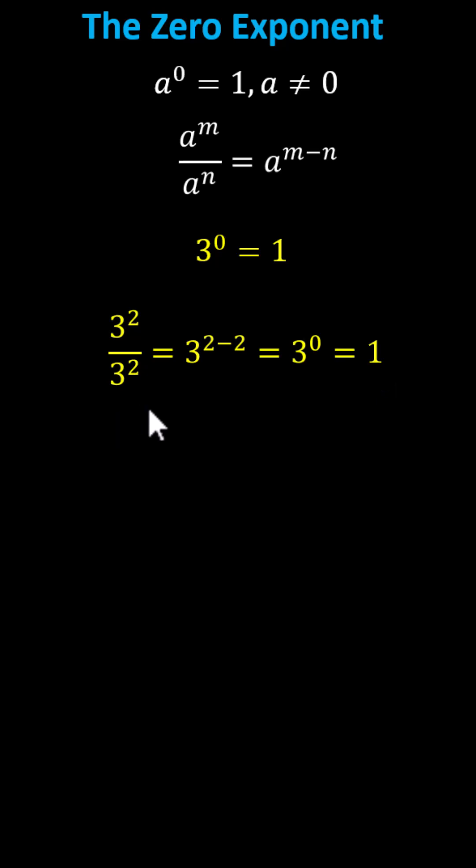And we could use the same argument for any base a as long as a doesn't equal zero. If a is equal to zero, we say zero to the power of zero is indeterminate. I hope you found this helpful.